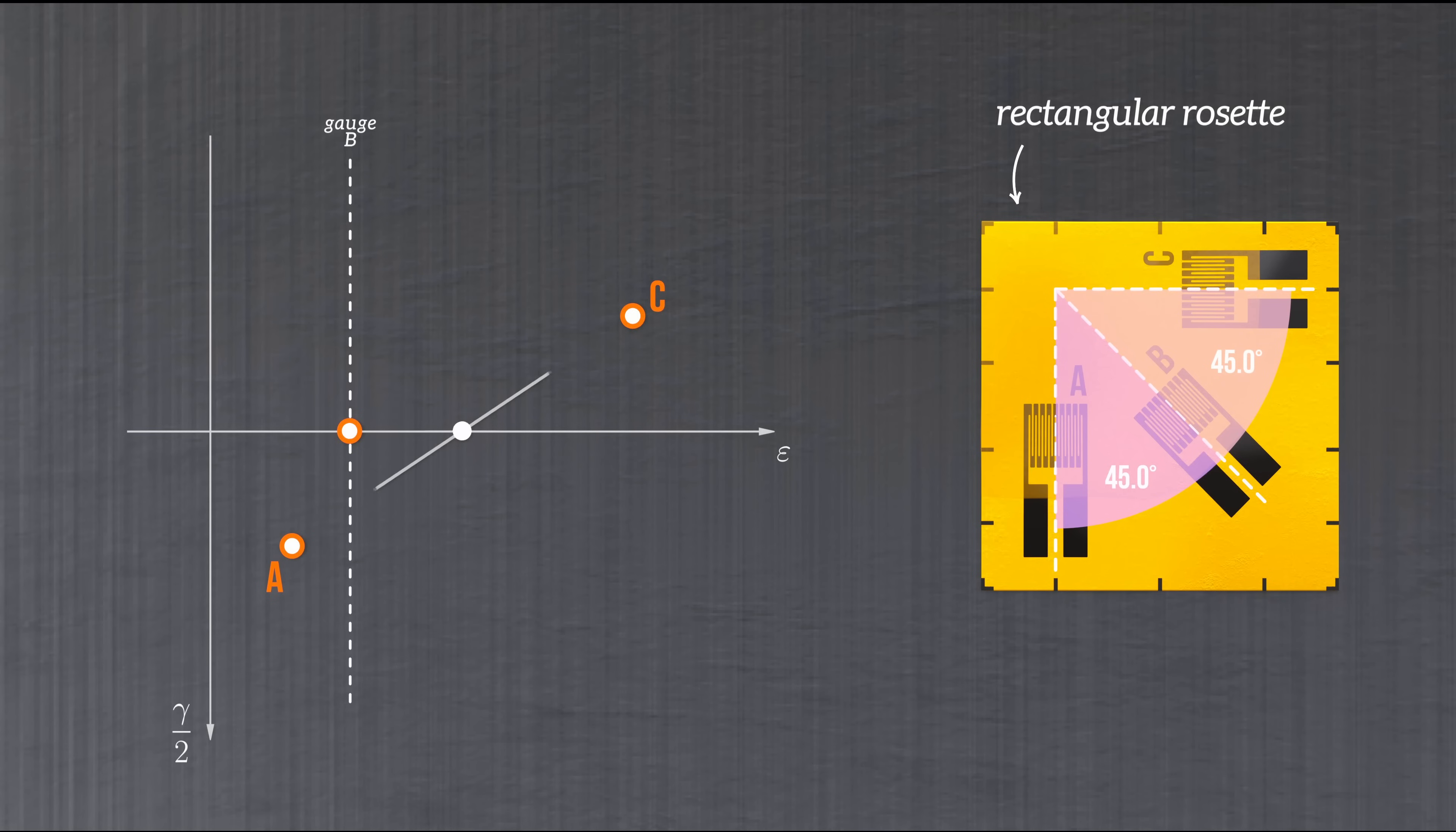With these two points, we can draw Mohr's circle. Remember that angles on Mohr's circle are always doubled. Strain gauges A and C are separated by 90 degrees. So there's a 180 degree angle between points A and C on Mohr's circle. And there's a 45 degree angle between strain gauge B and the other two strain gauges. So on Mohr's circle, the location of point B is obtained by drawing a line at 90 degrees to the line between points A and C.